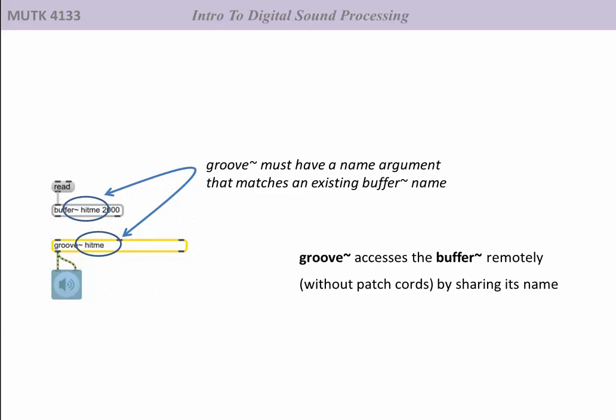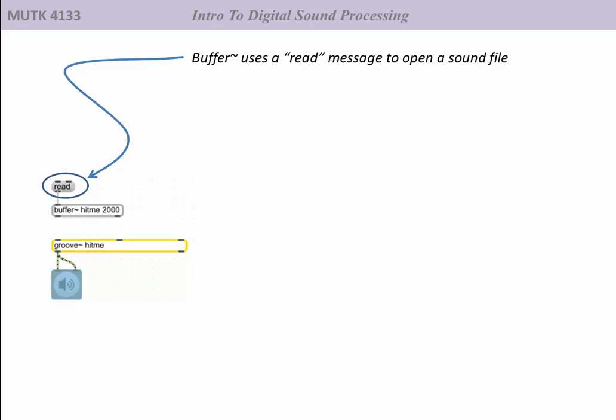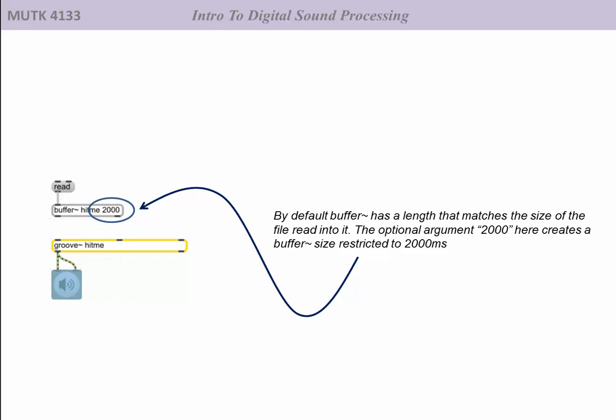In this example, the buffer~ is named Hit Me, and this particular example has an optional argument of 2000. That 2000 specifies the length of the buffer. By default, buffer would expand itself to whatever the length of the sound file is.